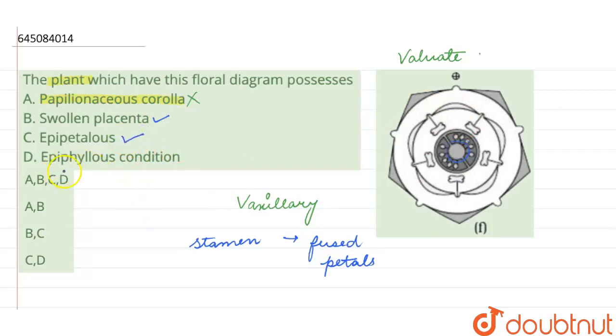And epiphyllous condition, meaning that when the stamen is fused with the perianth. And what is perianth? Perianth is when the petals and the sepals of the flower are fused together so that they form a uniform body, so that is called as perianth.